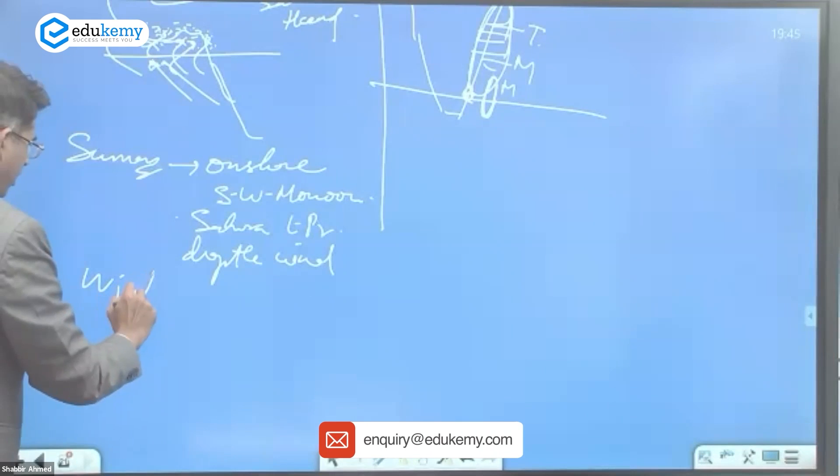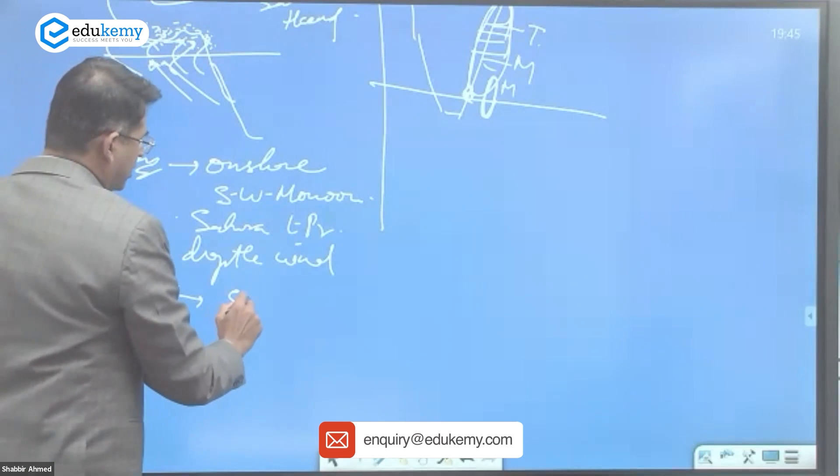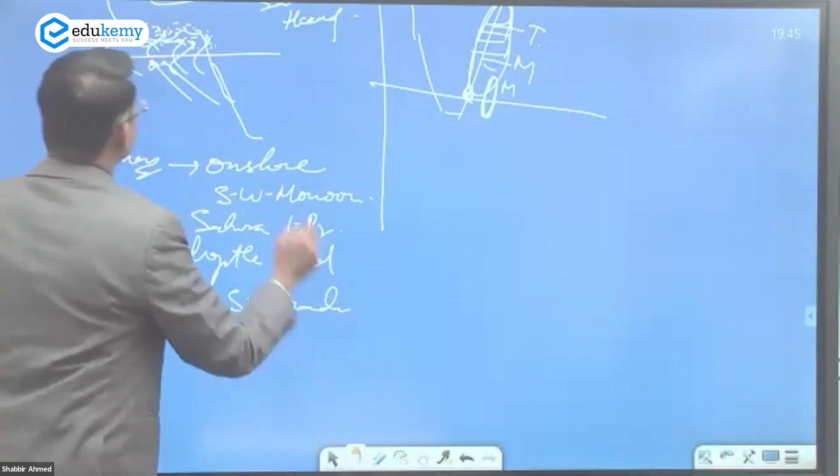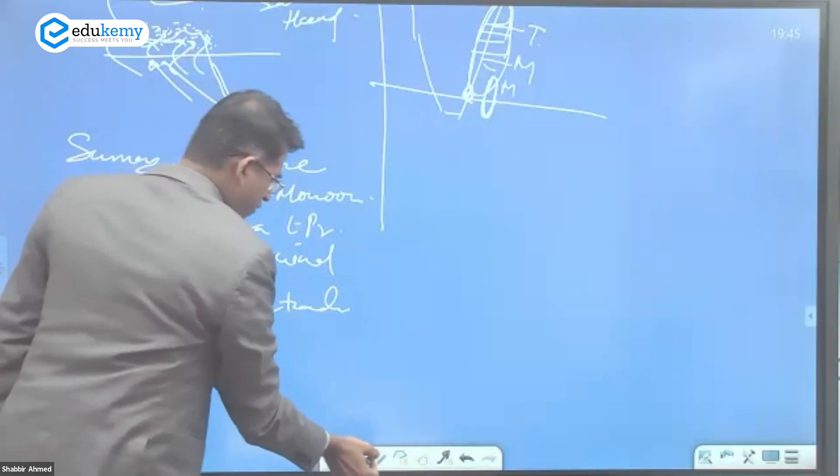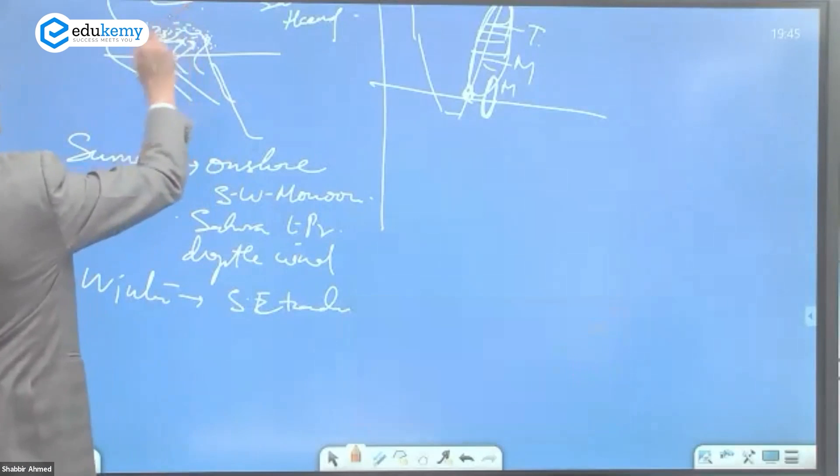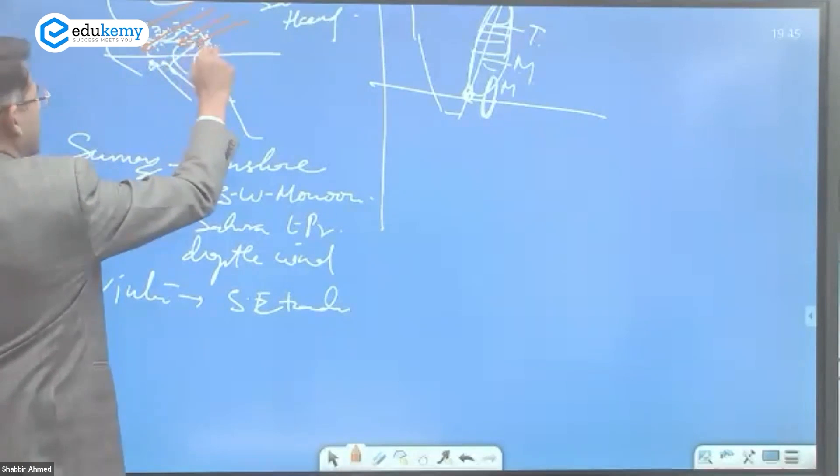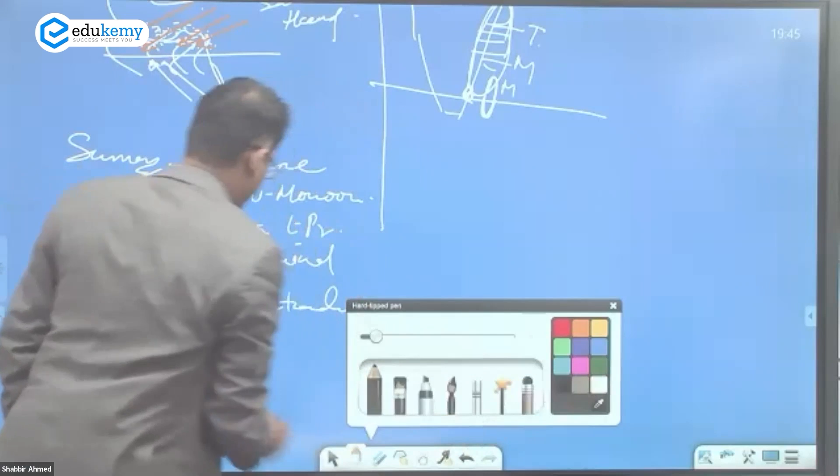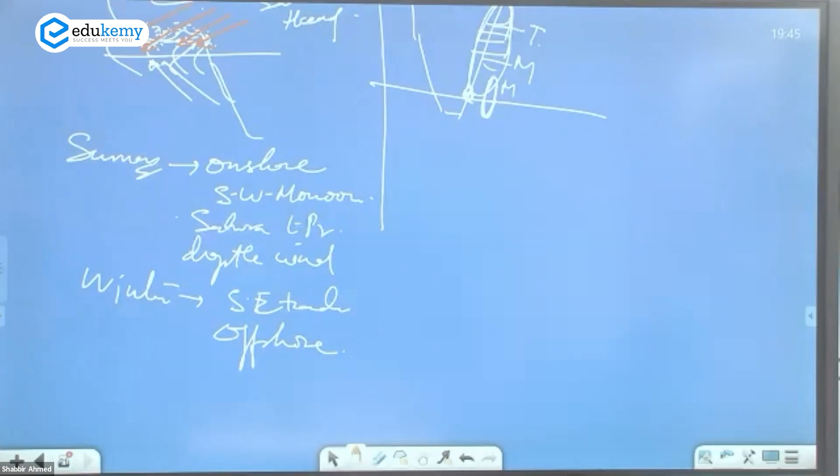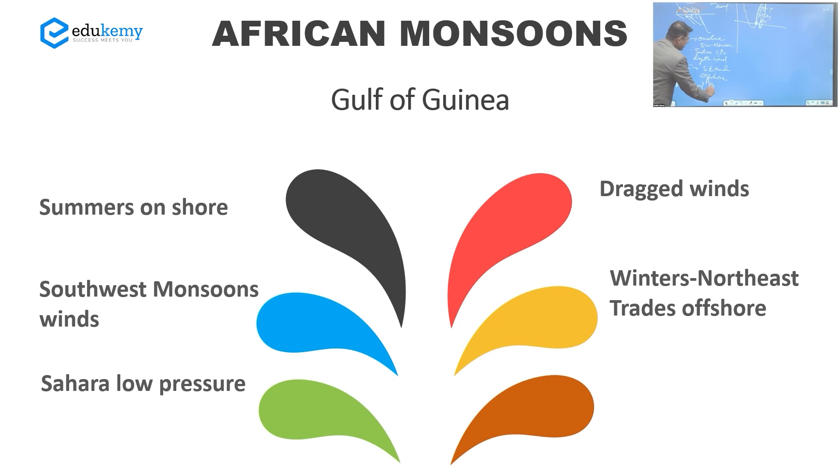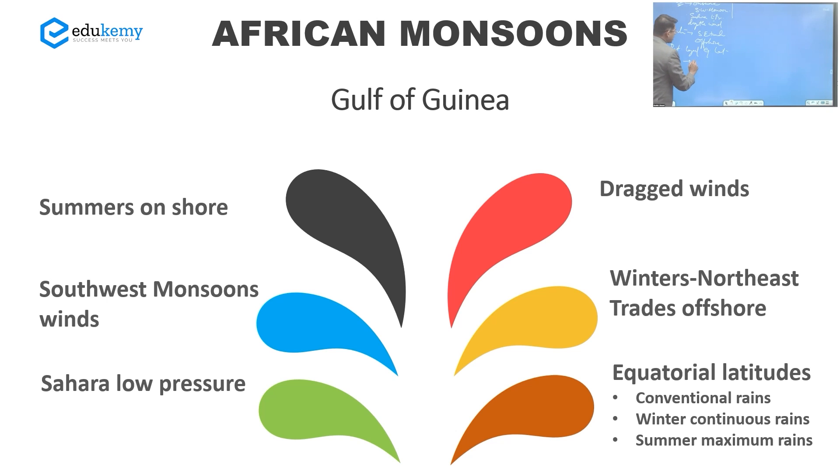In the winters, in the winters it is southeast trades. Winters - they have gone down. Now everywhere we have southeast trades. These are offshore but they are largely equatorial latitudes. So this area continues to have convectional rains because of equatorial conditions.